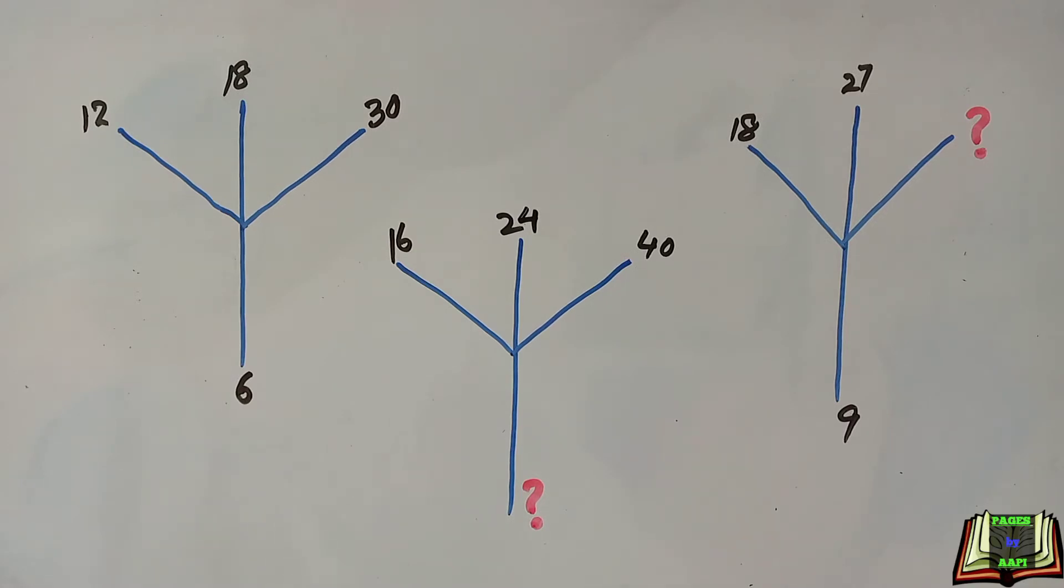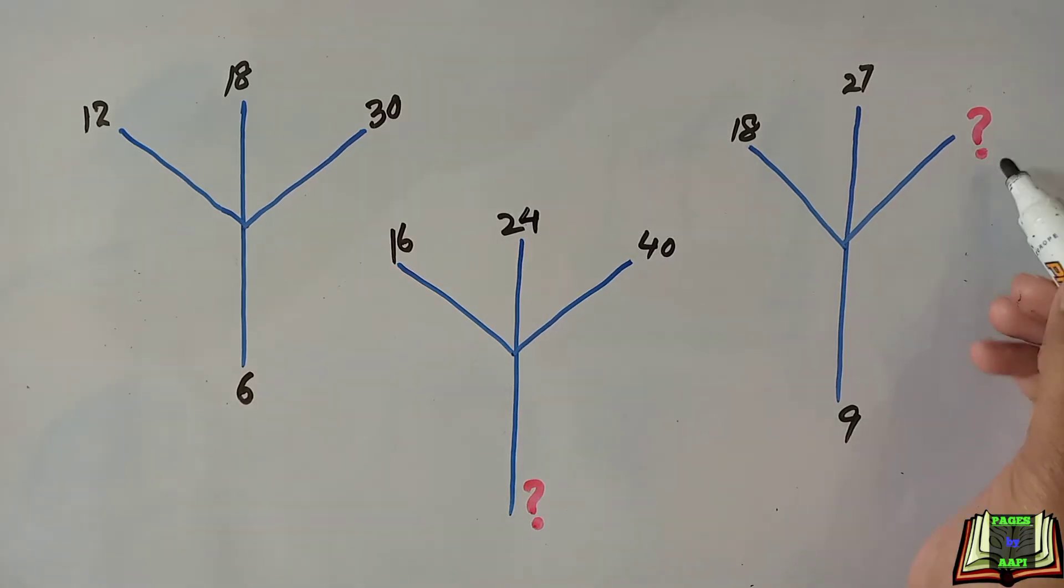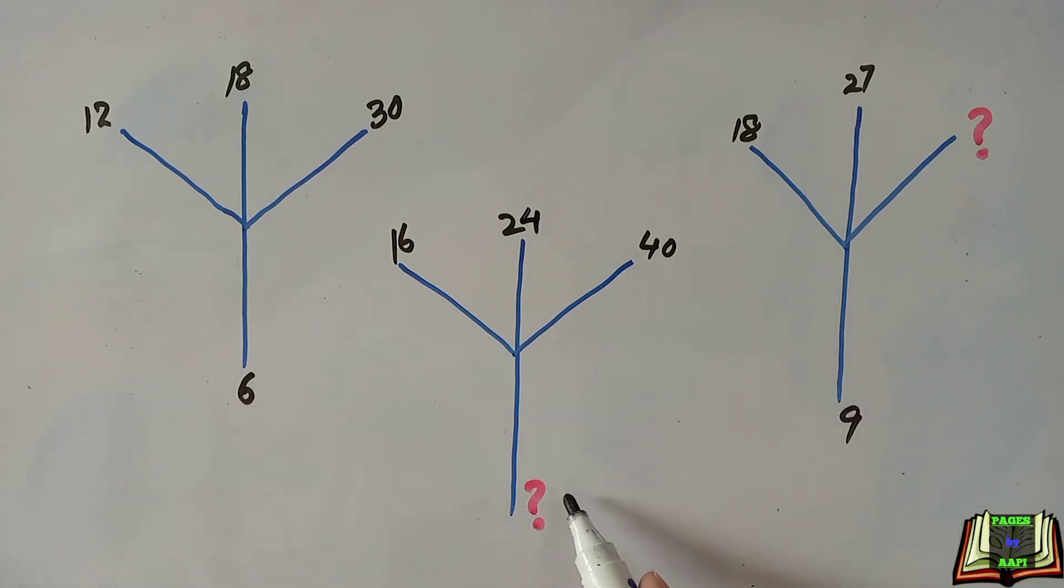Welcome back all of you. Today we are going to solve another interesting puzzle. There are three same tree-like pictures and we have to find out two unknown numbers. The rest of the numbers are given. First of all, we have to find out two unknown numbers.